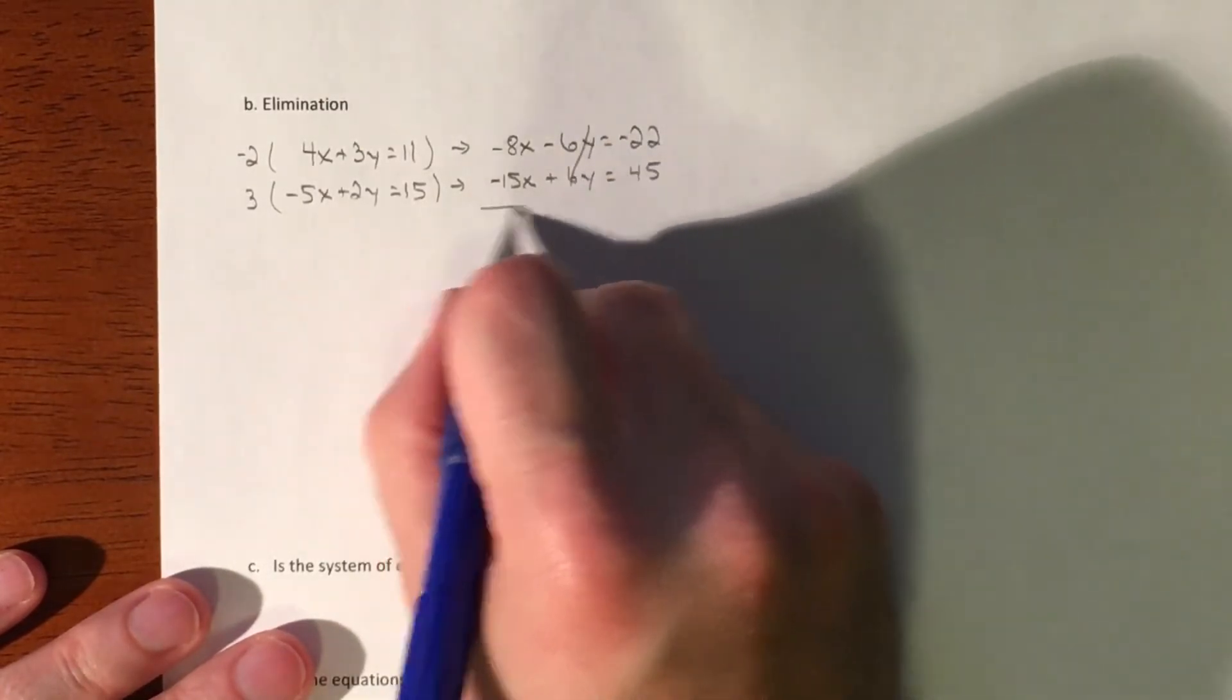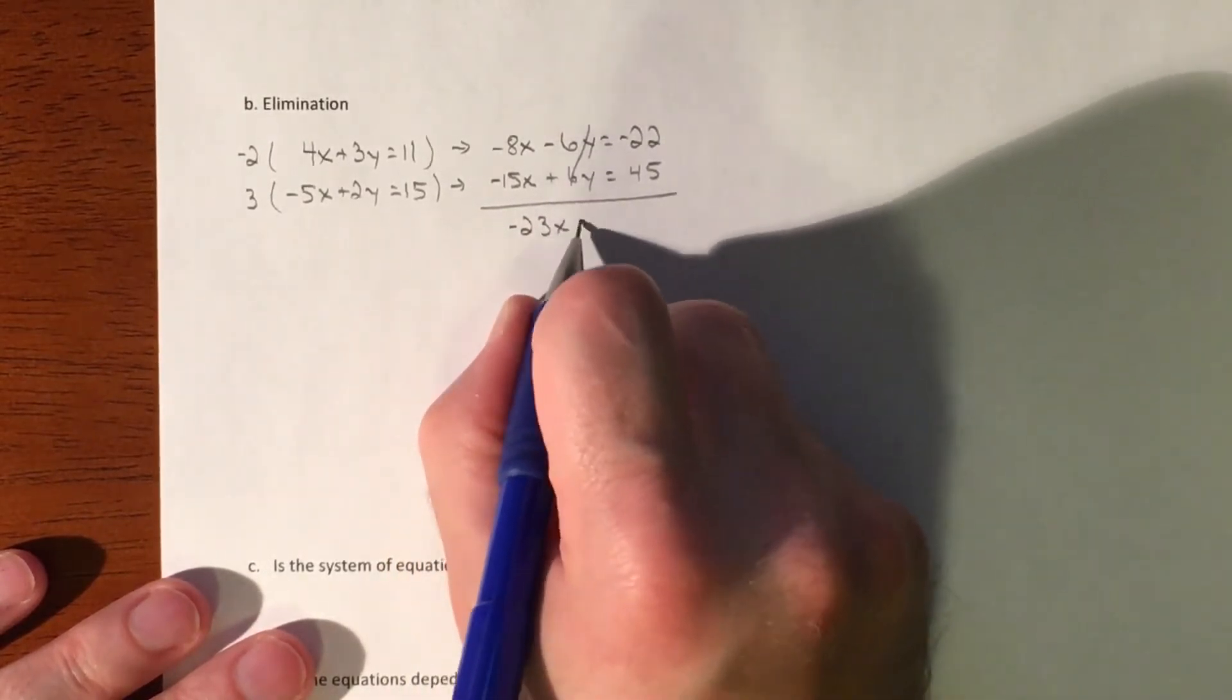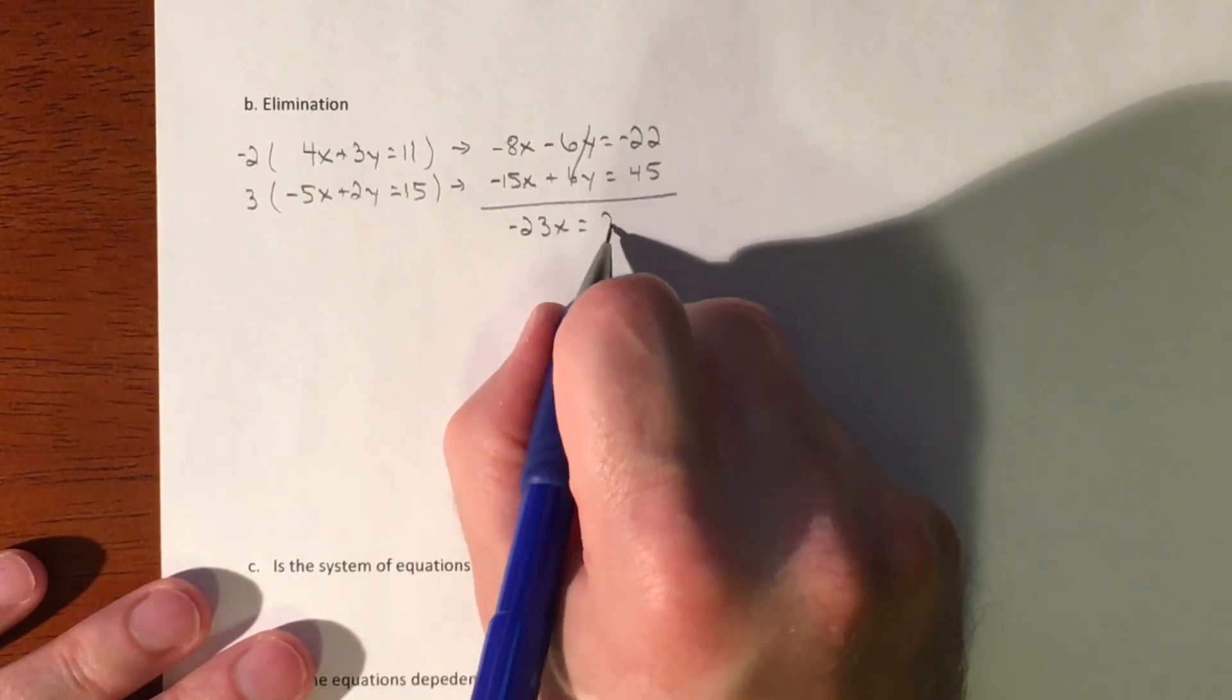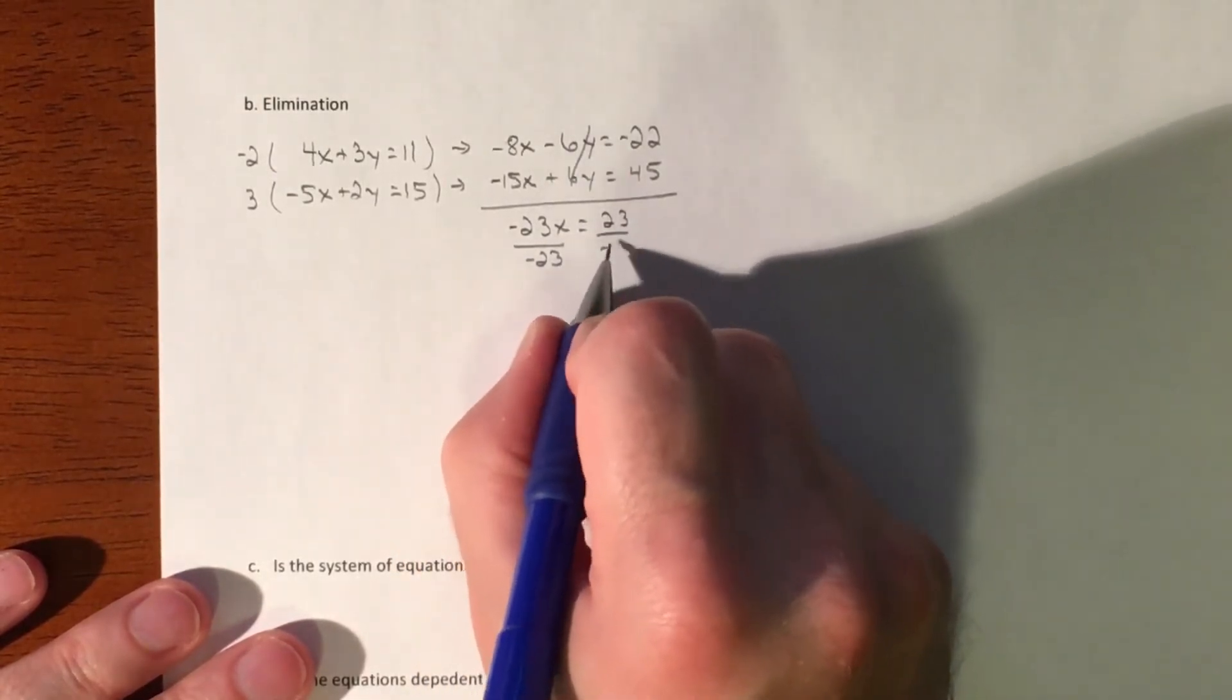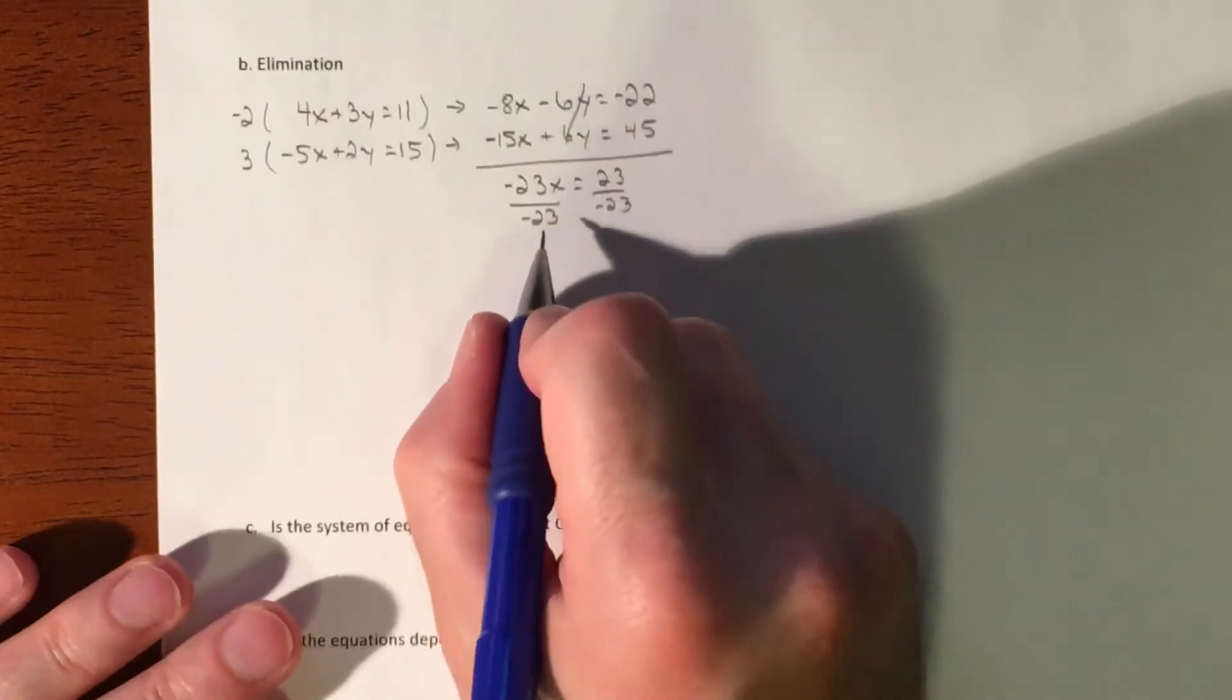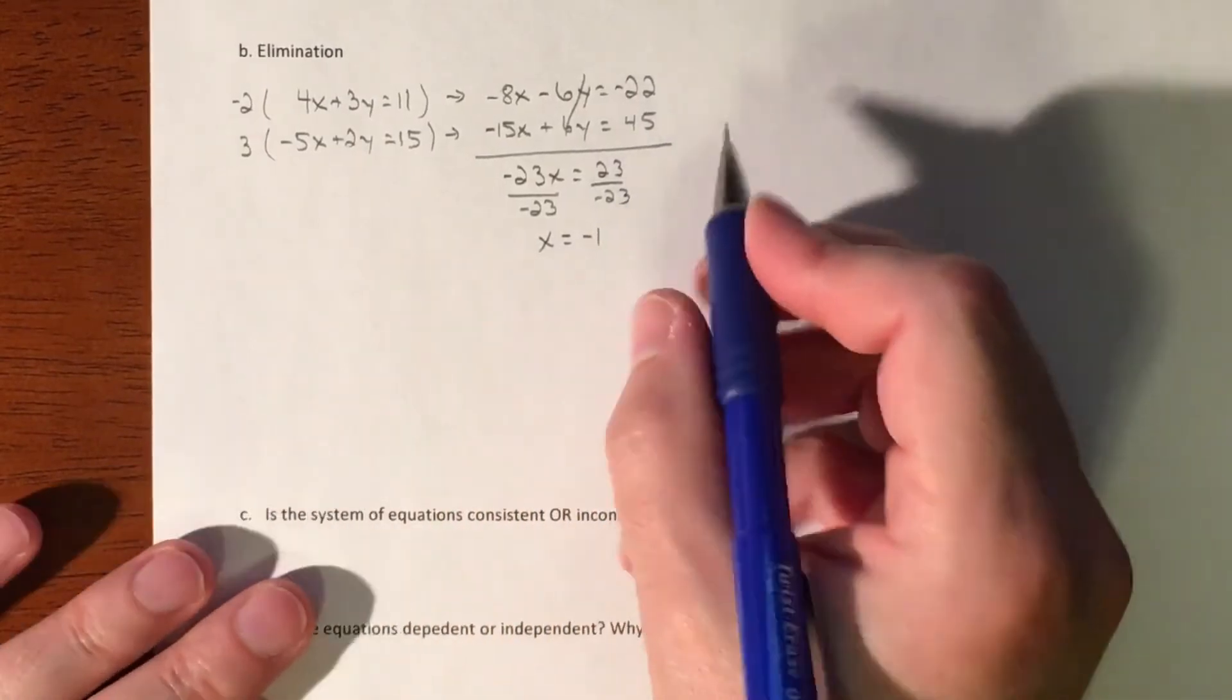So the y's go away. We combine our like terms. So negative 23x is going to equal a positive 23 divided by negative 23. So x is going to equal negative 1. Great.